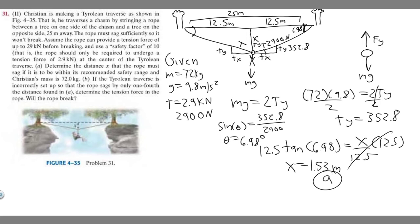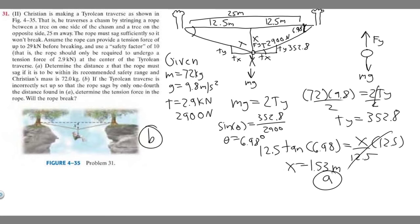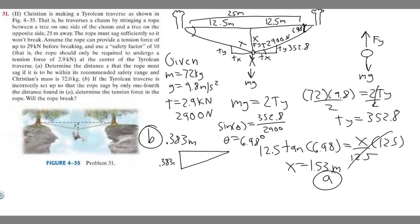Now we move on to Part B. It says the traverse is incorrectly set up so the rope sags by only one-fourth of the distance found in A. We know x was 1.53 meters, so in Part B it's going to be one-fourth of that — multiply by 0.25 — giving 0.383 meters. If we redraw the triangle, this side is 0.383 meters and this side is still 12.5 meters.